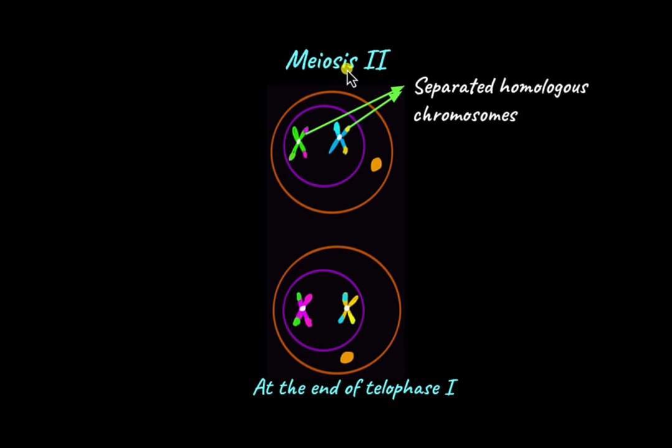Before these cells can undergo meiosis 2, they go into a stage known as interkinesis. Now in interkinesis, there is no DNA replication that occurs. The DNA has already been replicated before meiosis 1 began. So interkinesis is kind of like an intermediate stage, and in this stage the chromosomes do not fully decondense to form chromatin either. They are not fully decondensed, they are still somewhat chromosomes.